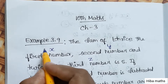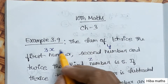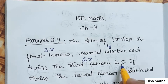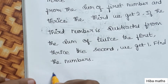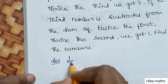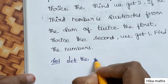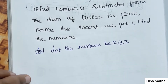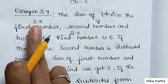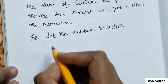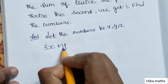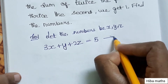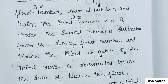Thrice the first number means 3 times X, plus the second number Y, plus twice the third number means 2 times Z, equals 5. So the first equation is: 3X + Y + 2Z = 5.